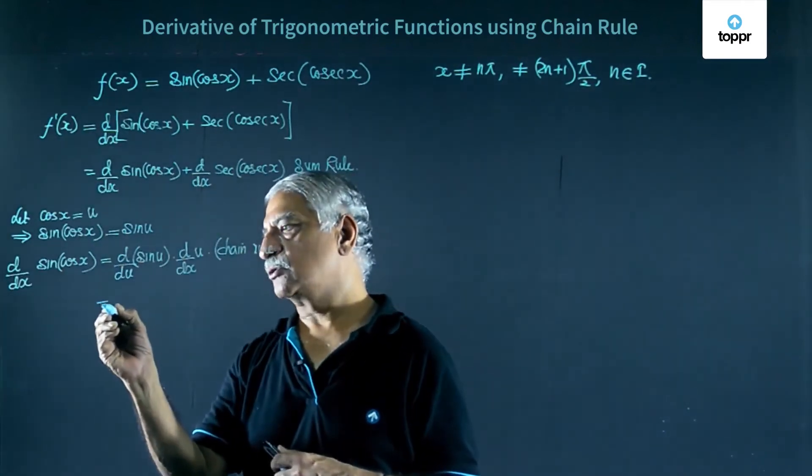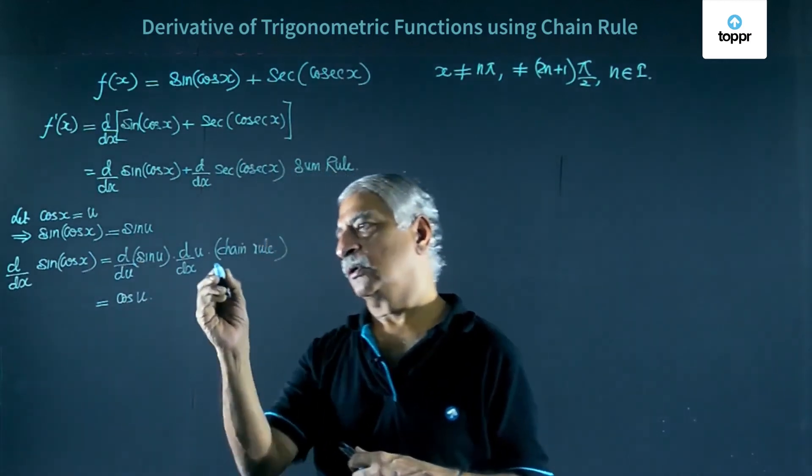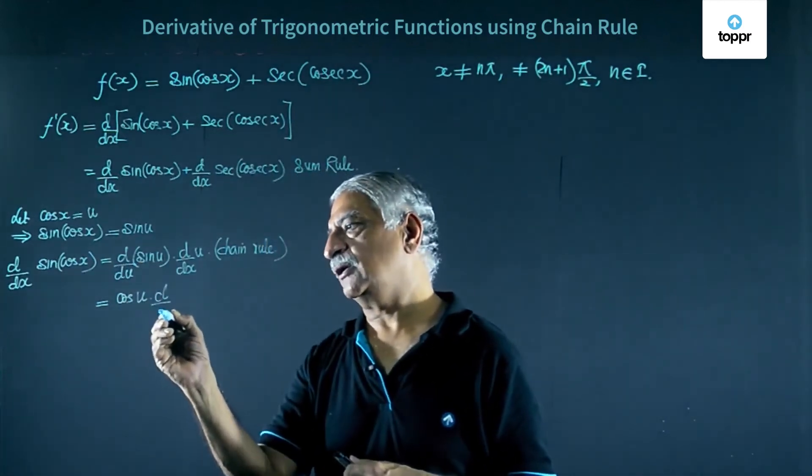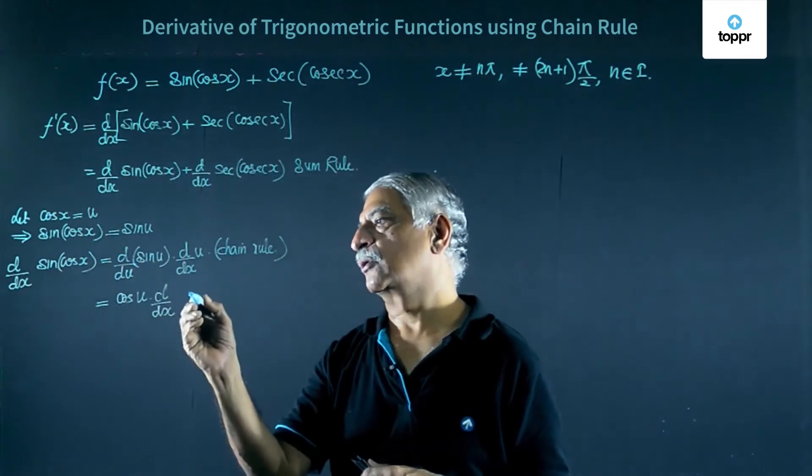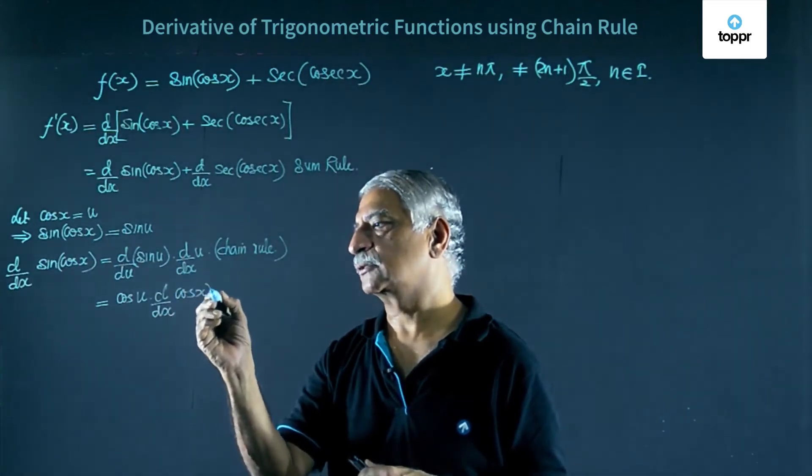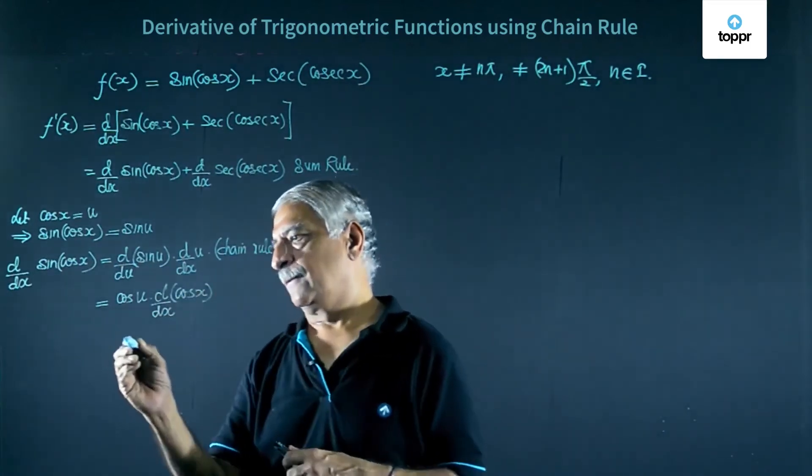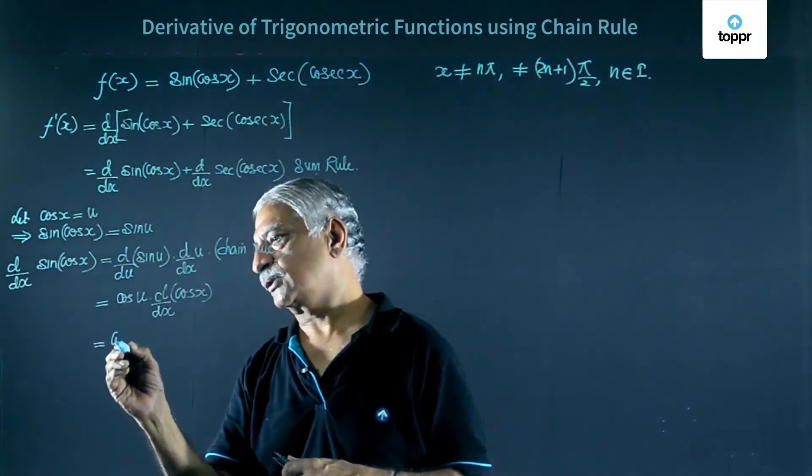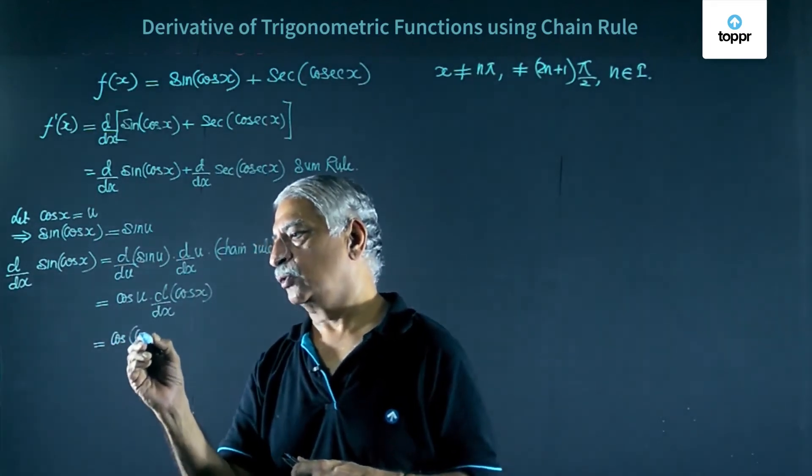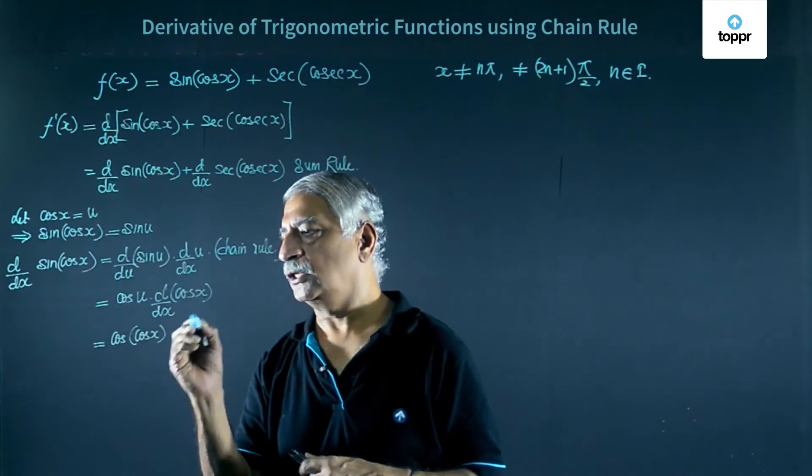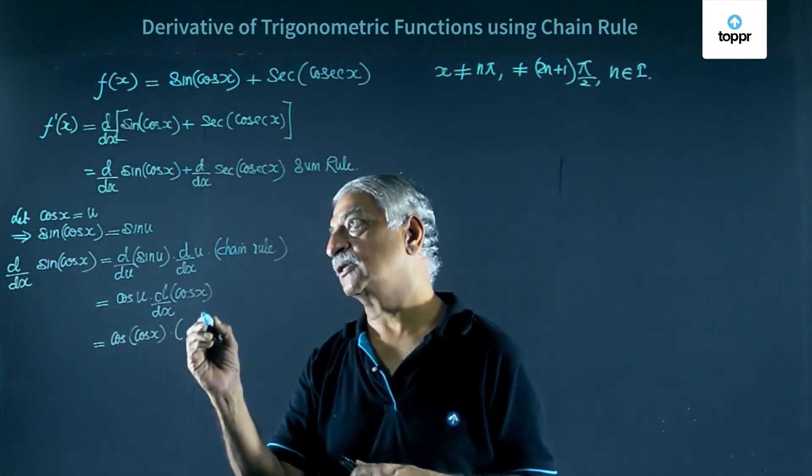This is equal to cos u. This gives me d by dx of cos x. u is cos x.